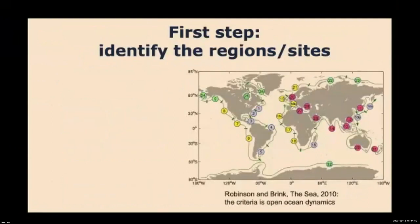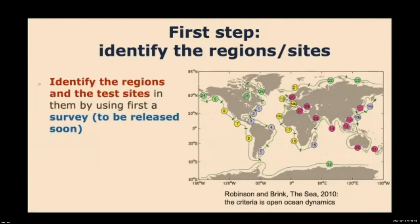The concept of the global coastal ocean is already written in four volumes with an accurate description. These works classify 32 regions mainly differentiated by open ocean dynamics, but also geomorphology, biogeochemistry, and ecosystem considerations — covering eastern and western sides of the ocean and areas near polar regions. We believe we could start from this. The first step is to identify these regions using this classification and a survey to determine test sites. The second step is to start implementation.